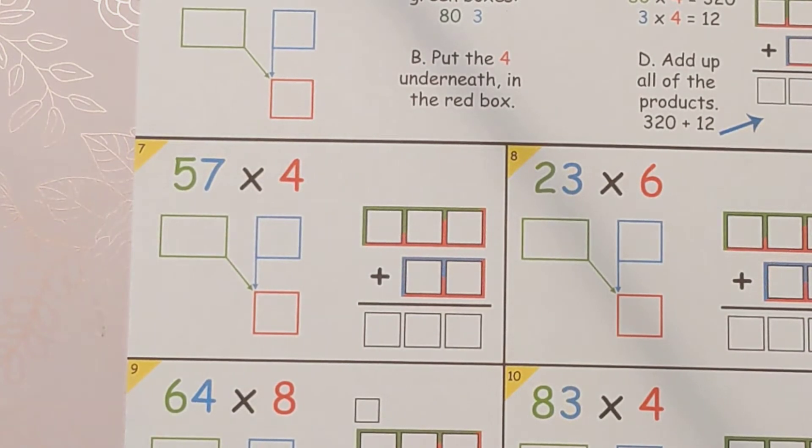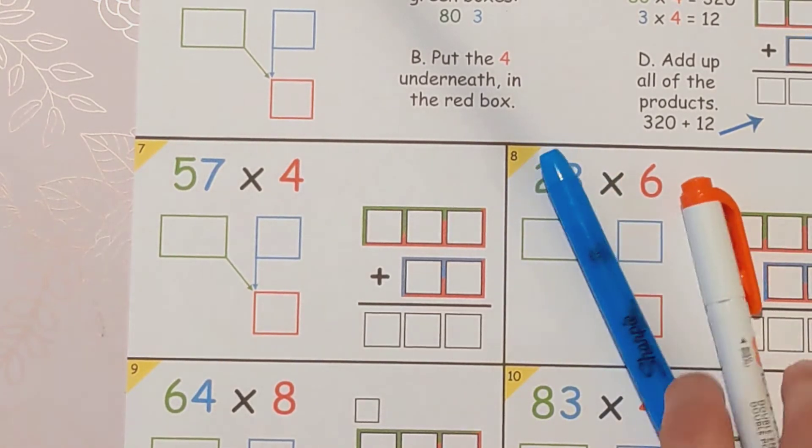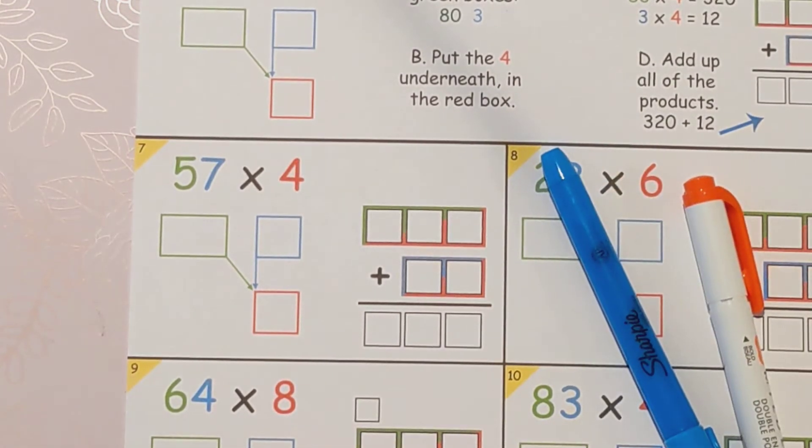That 57 is a big number and I can't just do 57 times 4, but if I split it up I could do 50 times 4 and then I could do 7 times 4. So we're splitting it into easier multiplication problems.